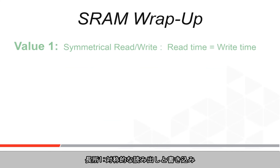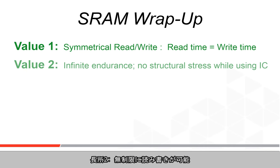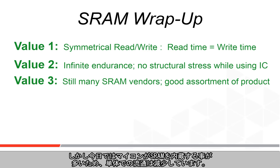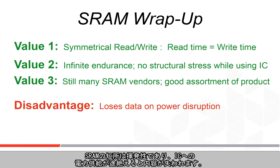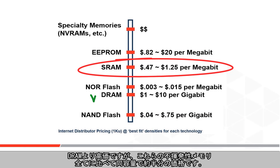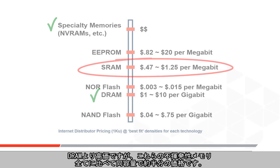Here is the SRAM wrap-up. Value number one: symmetrical read and write. Value number two: infinite read and write accesses with no structural damage. Value number three: SRAM is still widely available in IC form in various formats, speeds, and packages, though availability is dropping because so much SRAM is now on the microcontroller. The disadvantage of SRAM is it is non-volatile — content will be lost on any power loss to the IC. Notably, SRAM pricing is more expensive than DRAM but about half the price of non-volatile memories at the same density.